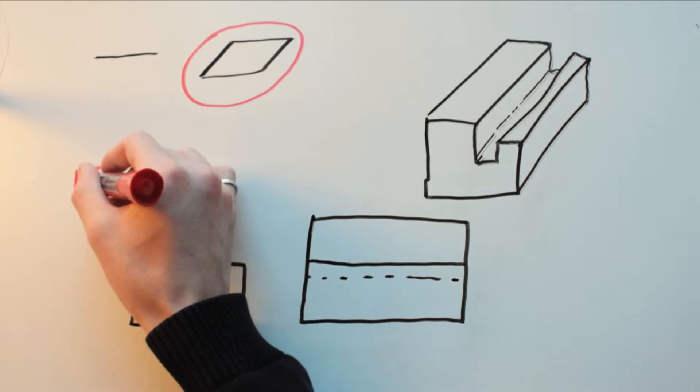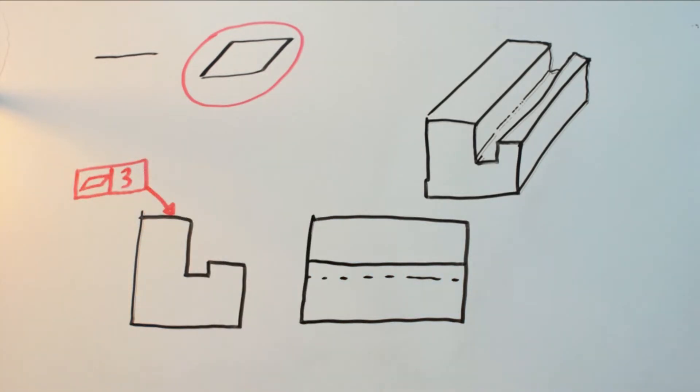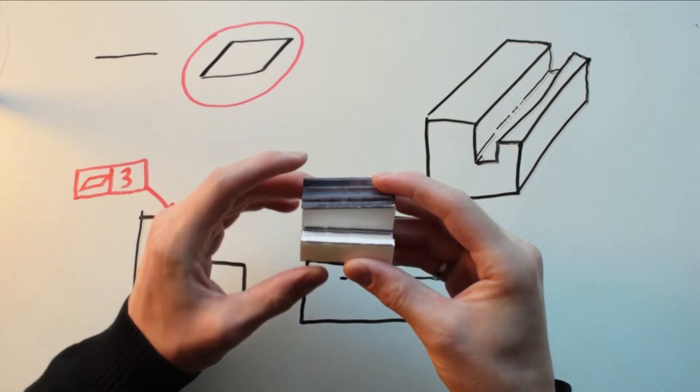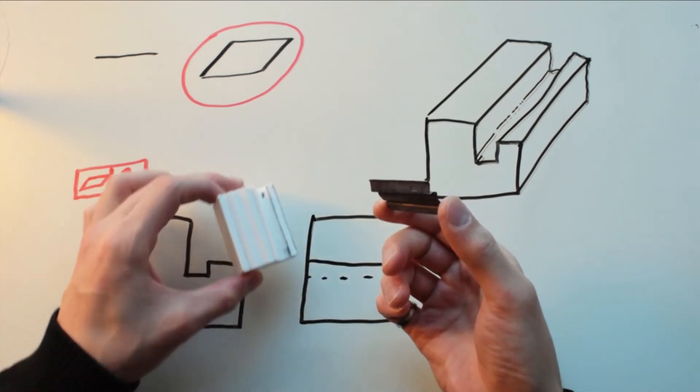Imagine I design a part with a 3mm flatness tolerance on the top face, but the CNC messes up and I end up with this. Now I'm pretty sure this part fails my flatness condition, but to check I'll separate the face from the part itself and check it with my 3mm flatness gauge.